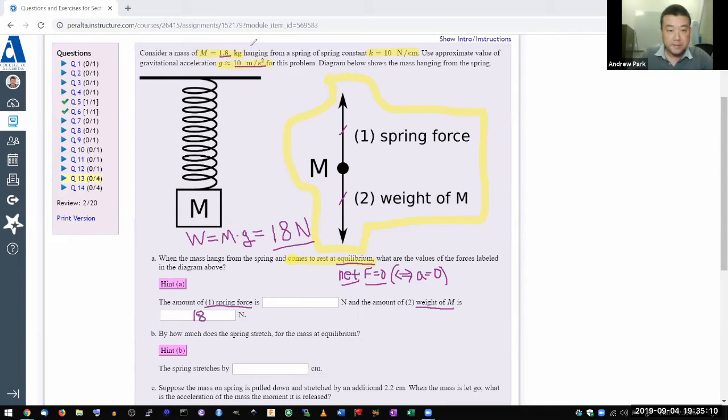This is where I would use the information I was talking about earlier. The net force equals zero. The only two forces acting are the spring and the weight of M. So if they have to add up to zero, spring force better be 18 newtons. Having done all this, I can actually plug in the answers now and submit it.